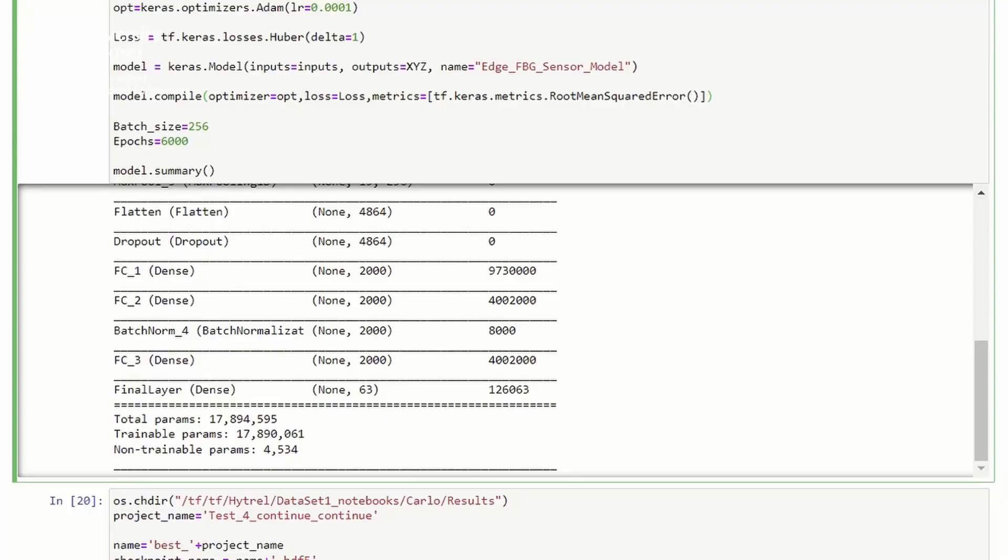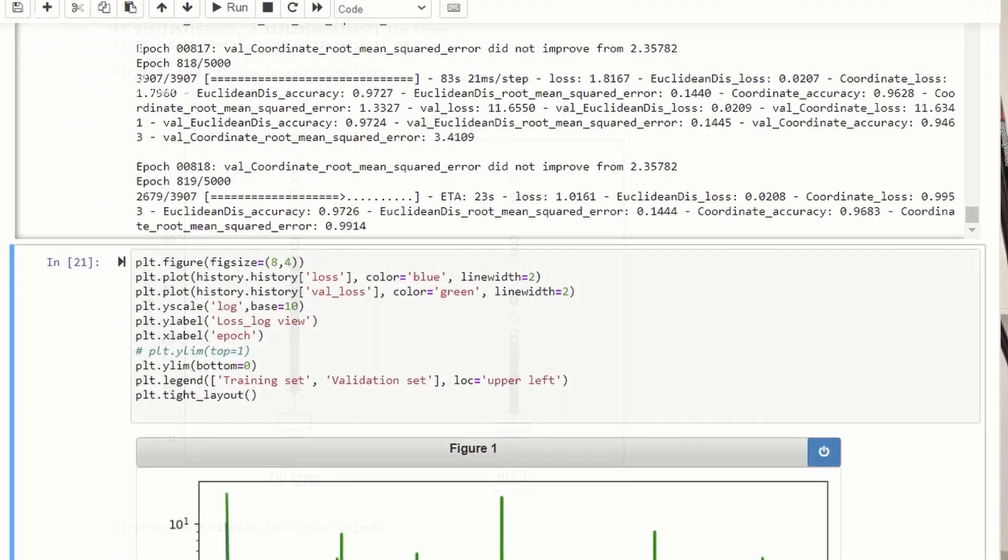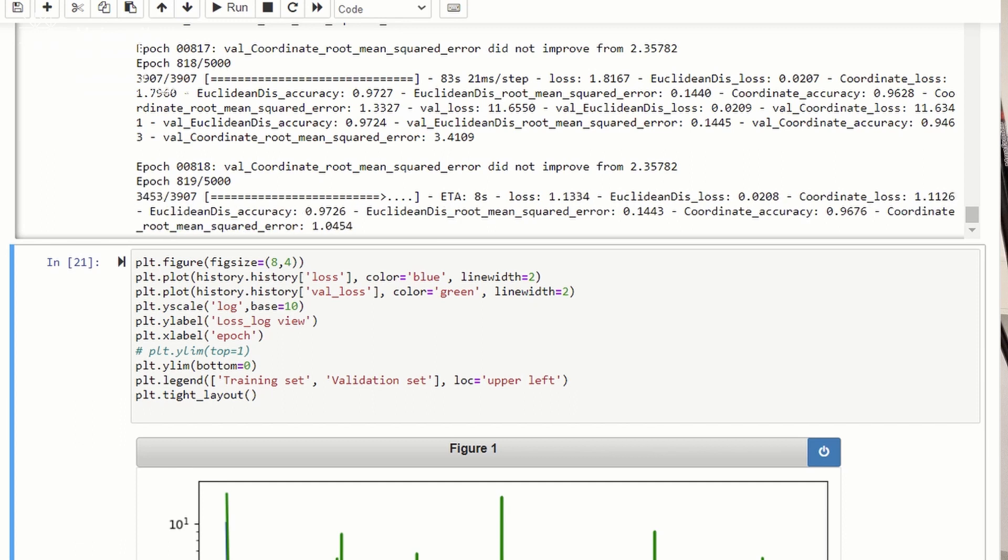We designed a deep neural network consisting of multiple convolutional layers in order to learn the spectral features in the sensor's signal.